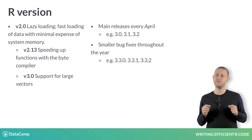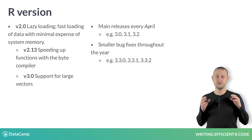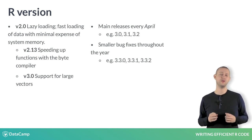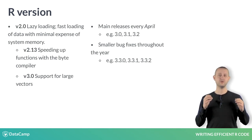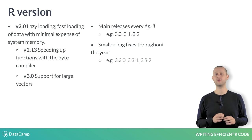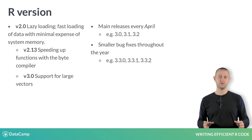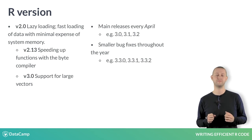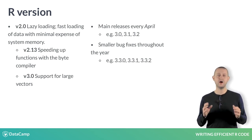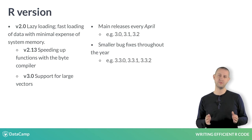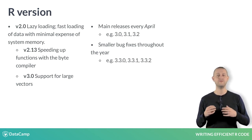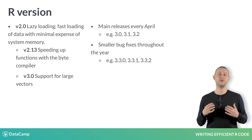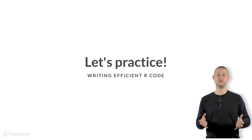Version 2.13 introduced byte compiling for speeding up functions, and version 3 supported large vectors, so your code runs faster. Main R releases happen every April, with smaller incremental updates occurring throughout the year. In the following exercise, you'll see how to check which version of R you run.